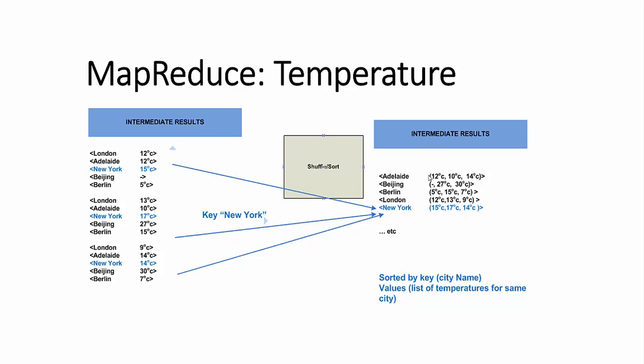The shuffle and sort mechanism will sort this data by key, which is the city name in our case, and you will notice that the values are not sorted horizontally. Only the keys are sorted.